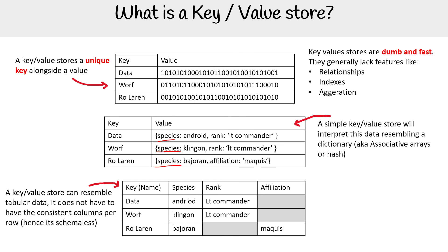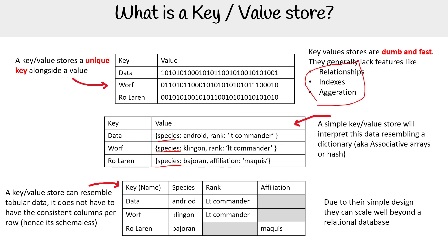That's a way to get tabular data from key values, but due to their simple design, they can scale well beyond relational databases. Relational databases become very hard to shard and do a bunch of other stuff with. But key value stores are super easy to scale, though they come with a lot of extra engineering around them because of these missing features.